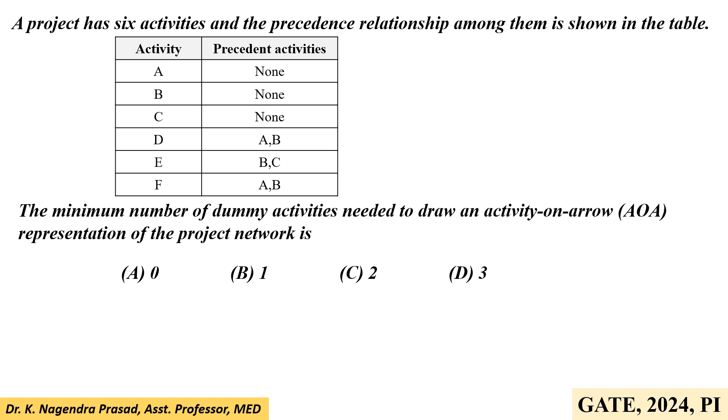A project has six activities and the precedent relationship among them is shown in the table. In the table, it is representing the six activities with precedent activities. The minimum number of dummy activities needed to draw an activity-on-arrow representation of the project network.